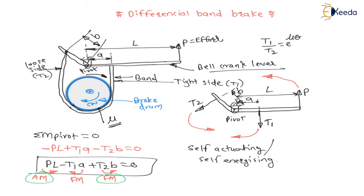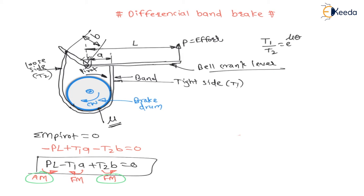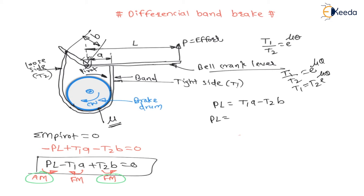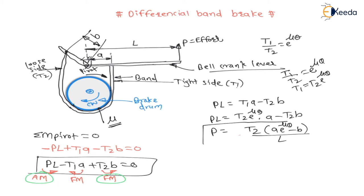To find the applied effort requirement, solve the equilibrium equation: P·l = T1·a − T2·b. Since T1/T2 = e^(μθ), we have T1 = T2·e^(μθ). Substituting: P·l = T2·e^(μθ)·a − T2·b. Therefore, P = T2·(a·e^(μθ) − b) / l. This is the applied effort required.